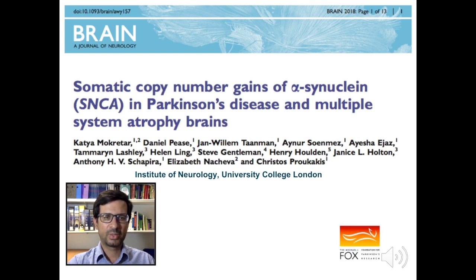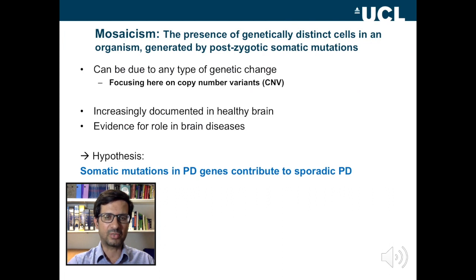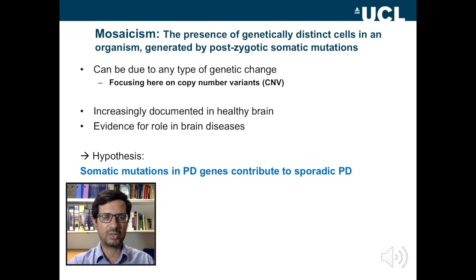This work is about genetics, but not genetics in the conventional sense where an inherited mutation or risk allele may affect the risk of a disease. This is about the possibility of somatic mutations — mutations occurring post-zygotically in development or perhaps in aging — which would lead to mosaicism, so the presence of cells in an organism with different DNA in different cells or parts of the body.